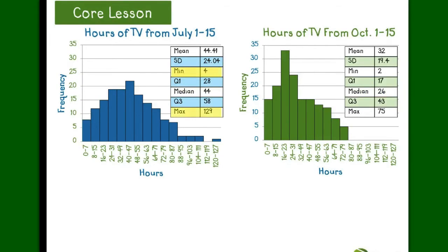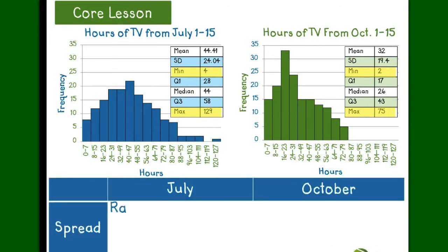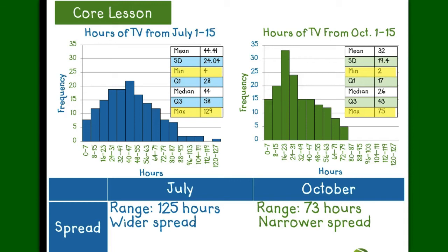Using our maximum and minimum data points, we find that July has a higher range, spanning more than 125 hours, while October only spans a total of 73 hours. This means that July has a wider spread.